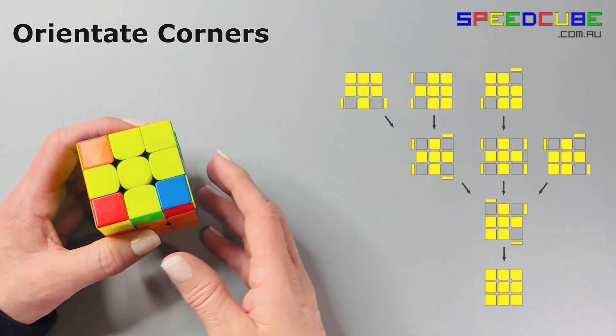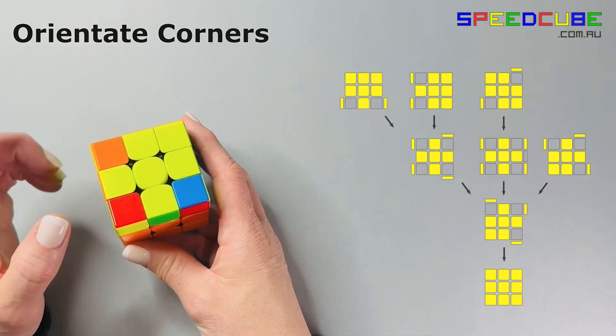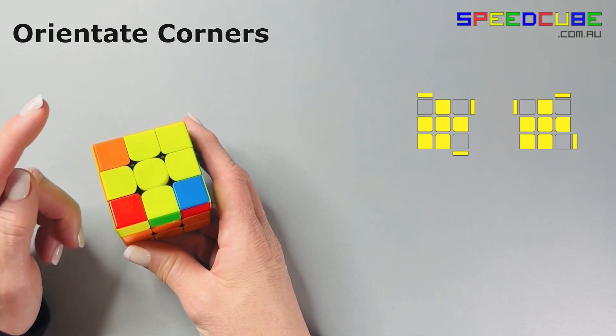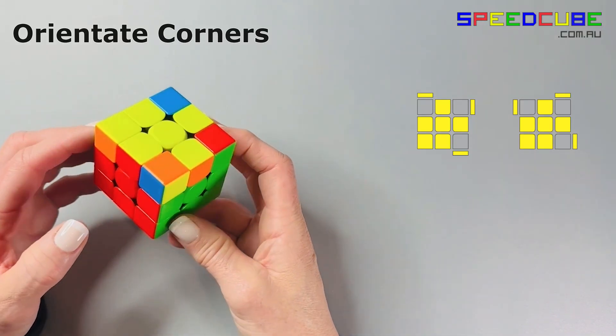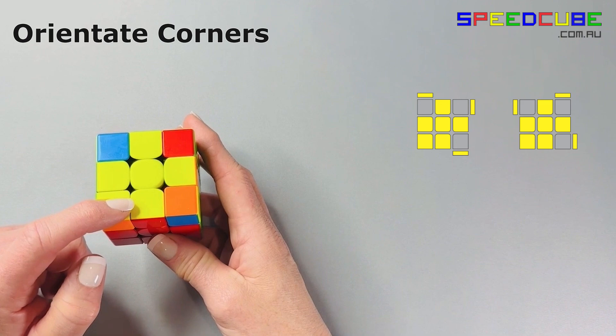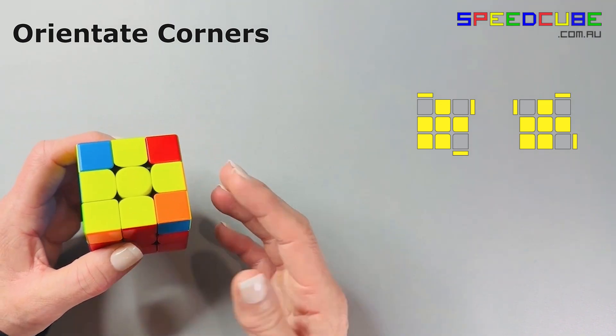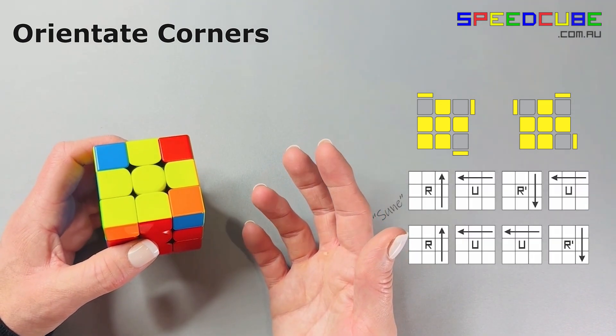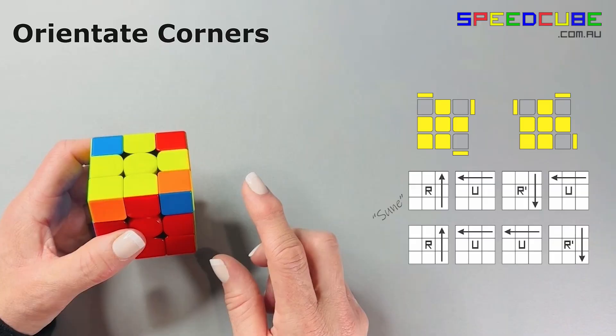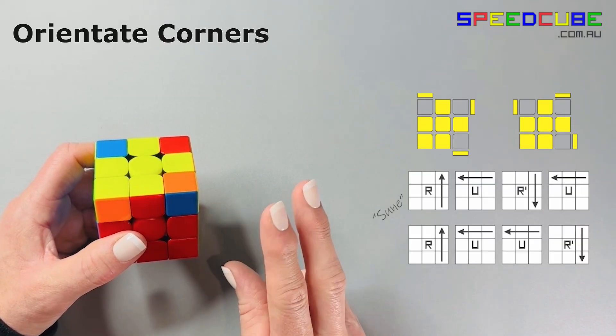You'll have one of the following cases. If you have one corner facing up, then hold your cube so that that corner is in the front left-hand side, over here, and perform this algorithm. You might have to do it twice, depending on this corner here.